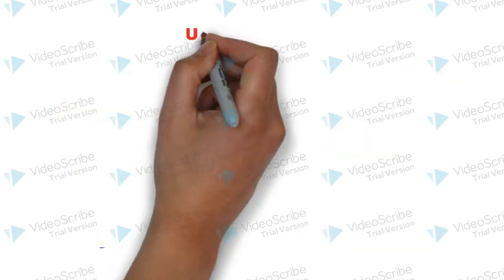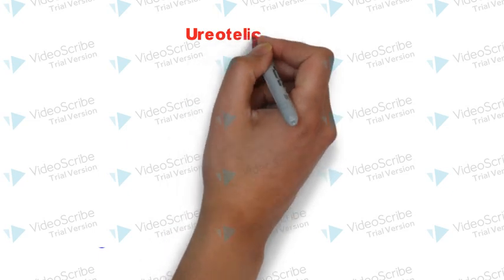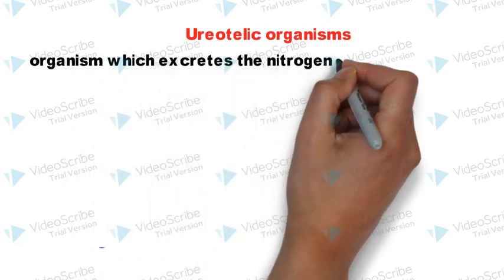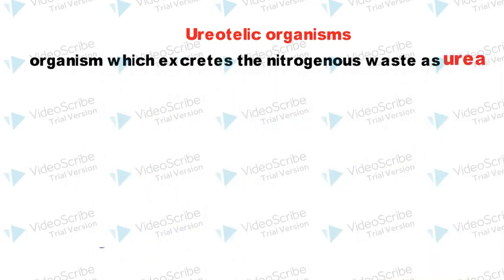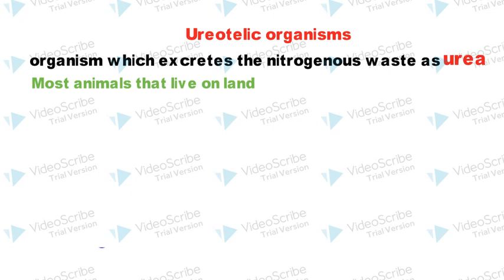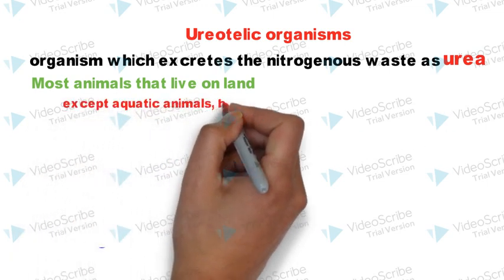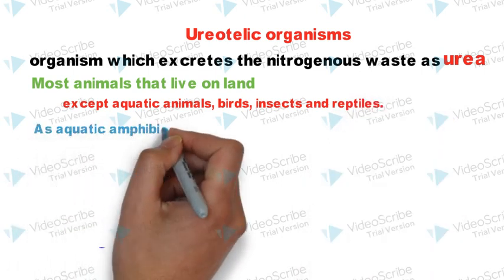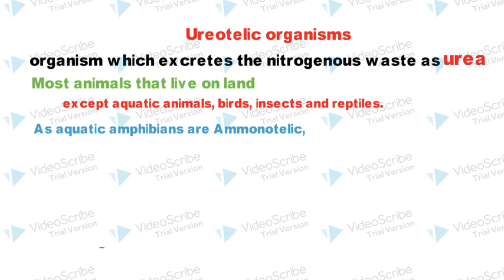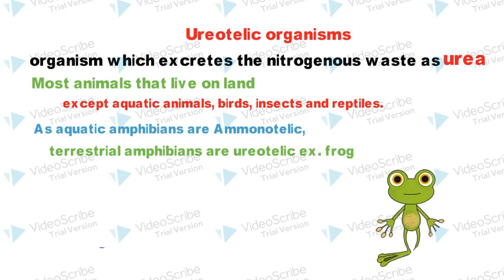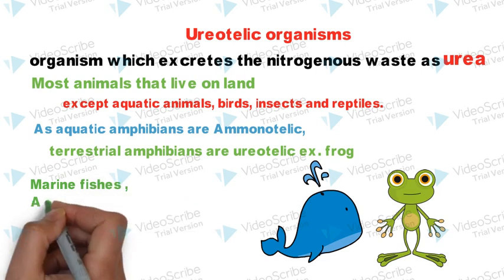Let's move on to the next one which is Ureotelic organisms. These are the organisms which excrete the nitrogenous waste as urea. Most animals that live on land are Ureotelic organisms, except the aquatic animals, birds, insects and reptiles. As aquatic amphibians are Ammonotelic, terrestrial amphibians are Ureotelic — for example, the frog. The examples are marine fishes, terrestrial amphibians, and mammals.